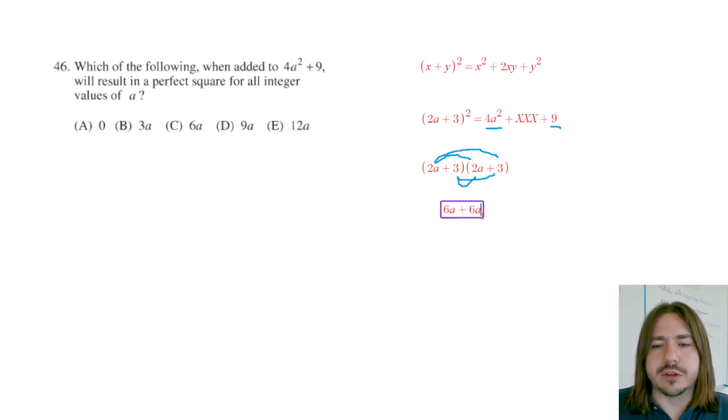So our middle term should be 6a plus 6a which is 12a. So if we plug 12a in here you will get the perfect square trinomial.